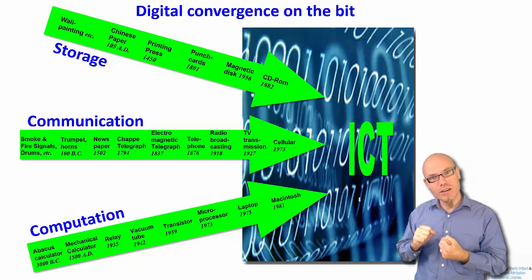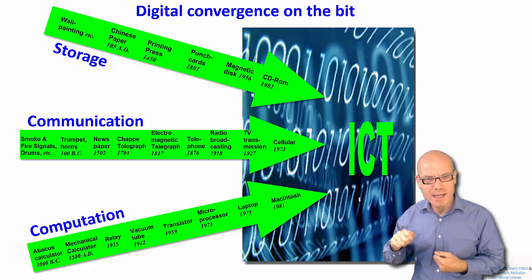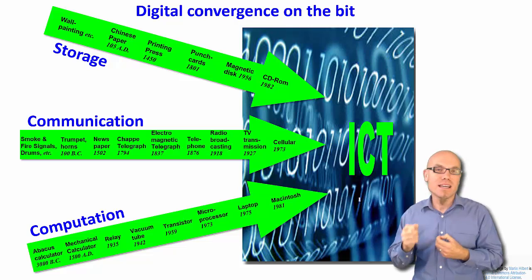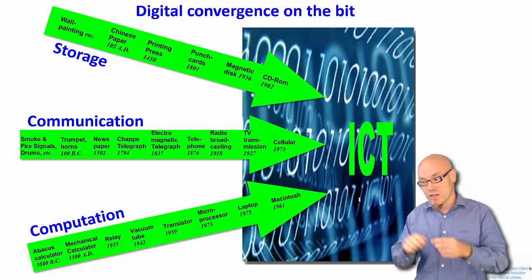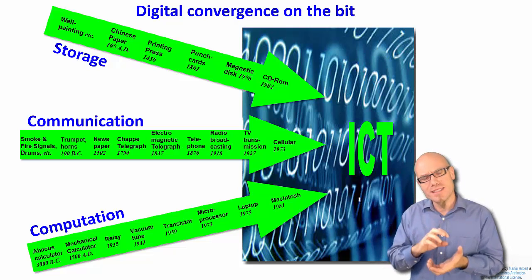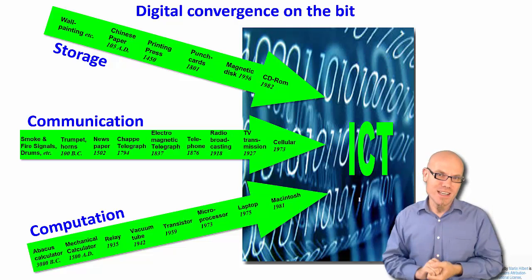So while previously you had to handle it separately - for example, you were writing a letter, then translating it to Morse code and communicating it, and then you had to calculate with an abacus in order to then again write a letter - nowadays all of them happen basically on the same technological format. The bit, information is digitalized.